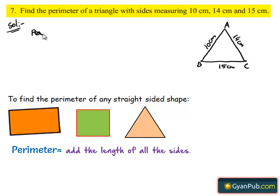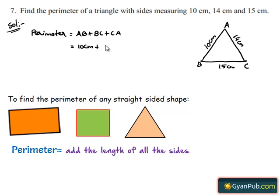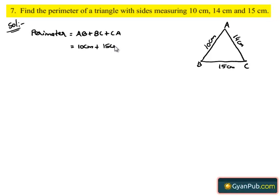So we can write the perimeter as AB plus BC plus CA. This is equal to length of AB is 10 cm plus BC is 15 cm plus CA is 14 cm.